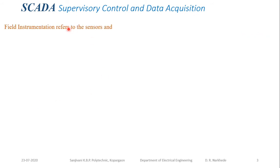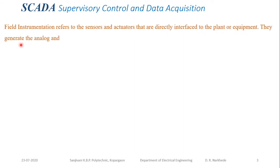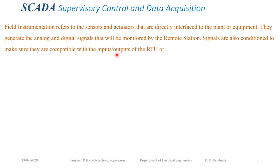Field instrumentation refers to the sensors and actuators that are directly interfaced to the plant or equipment. They generate analog and digital signals that are monitored by the remote station. Signals are also conditioned to make sure they are compatible with the inputs and outputs of the RTU — Remote Terminal Unit — or PLC at the remote station. The sensors are input devices and actuators are output devices, directly connected to the plant or equipment.